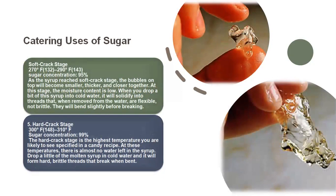Next is soft crack stage. The temperature has reached 132 degrees centigrade and sugar concentration is 95%. As the syrup reaches soft crack stage, the bubbles on top will become smaller, thicker, and closer together. The moisture content is very low. When you drop a bit of syrup into cold water it will solidify into threads that, when removed from the water, are flexible but not brittle. They will bend slightly before breaking.